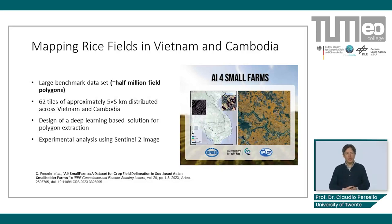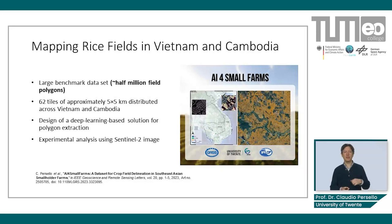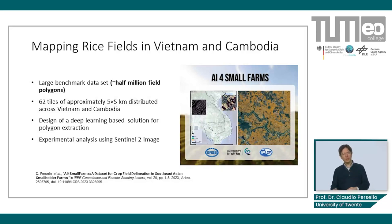Another challenge in field boundary delineation is the limited availability of training labels. To address this problem, we have recently developed a benchmark dataset with almost half a million field polygons divided into 62 tiles of approximately 5 by 5 kilometers, distributed across Vietnam and Cambodia, covering a range of fields and diverse landscape types. The field polygons have been meticulously digitized from satellite images following a rigorous multi-step quality control process and topological consistency checks. Multi-temporal composites of Sentinel-2 images are also provided to ensure cloud-free data.